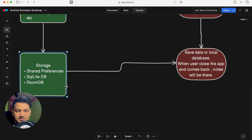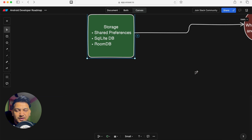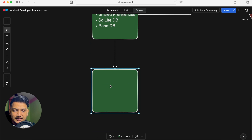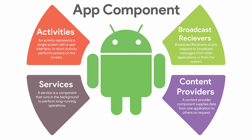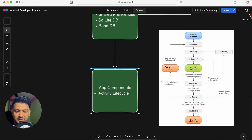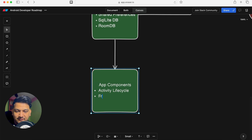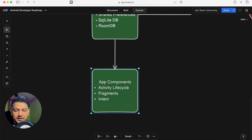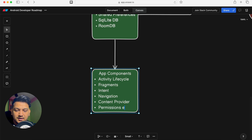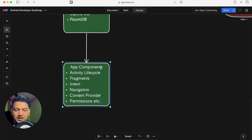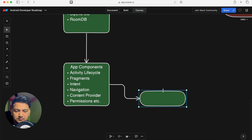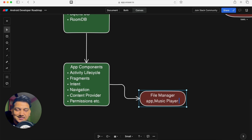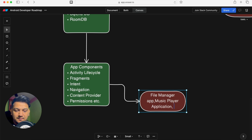Next, learn Android app components: Activity lifecycle methods (onCreate, onStart, onPause, onStop, onResume, onDestroy), Fragments, Intents for passing values within or between applications, Navigation, Content Providers, and Permissions. To practice these, you can create a File Manager app to access external storage, a Music Player app, or any multi-fragment application.